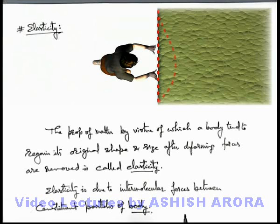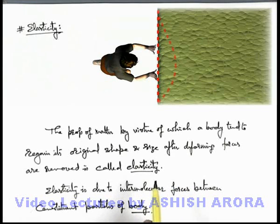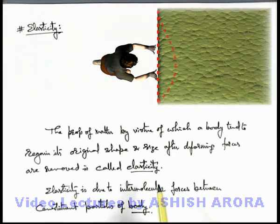We can simply state that whenever an elastic body or a matter is deformed, the work done in deformation is stored in the body in the form of elastic potential energy, just like the case of a spring. When a spring is compressed or elongated, the work done on it is stored in its potential energy.